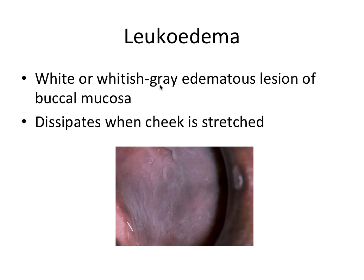Leukoedema — just know a couple of key buzz phrases. It's basically this white or whitish-gray edematous lesion of the buccal mucosa. It's very common on the buccal mucosa, and it dissipates when the cheek is stretched. If you take two fingers and stretch it out, the lesion looks like it goes away briefly, because of the collection of fluid in this area.